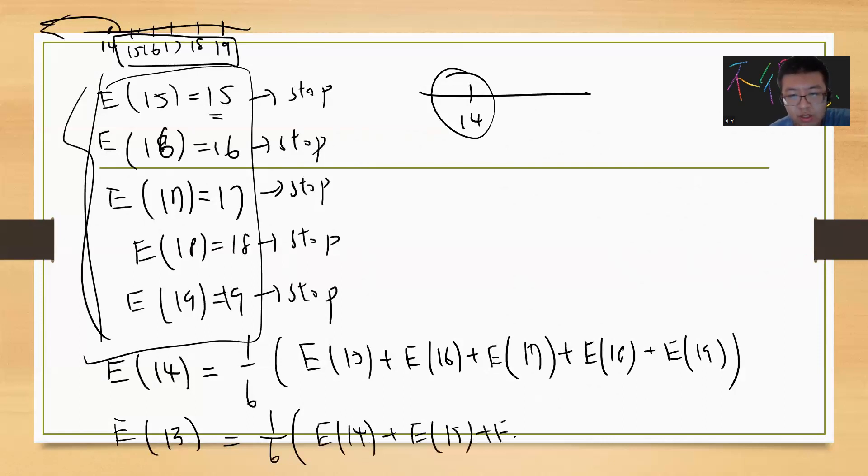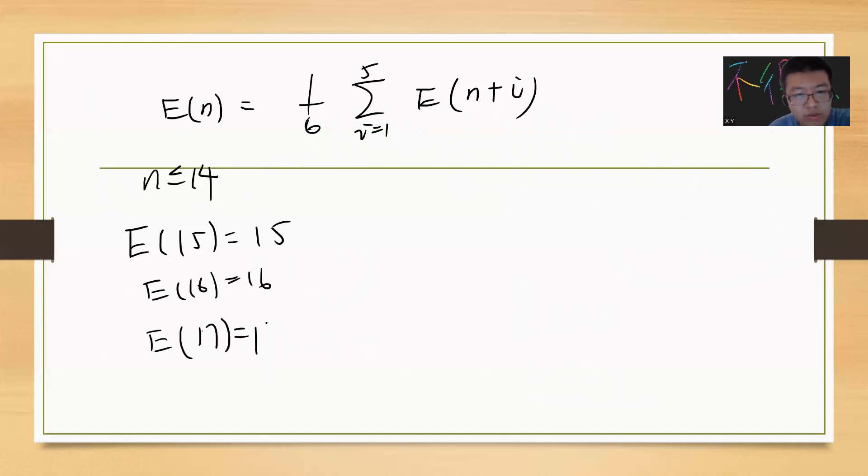So the expectation value of n will be, for n less than or equal to 14: E(n) = 1/6 × sum of E(n+i) for i from 1 to 5. The boundary conditions are E(15)=15, E(16)=16, E(17)=17, E(18)=18, E(19)=19. You plug these in and then just go back to solve, and finally you can ask what's the expectation of zero.